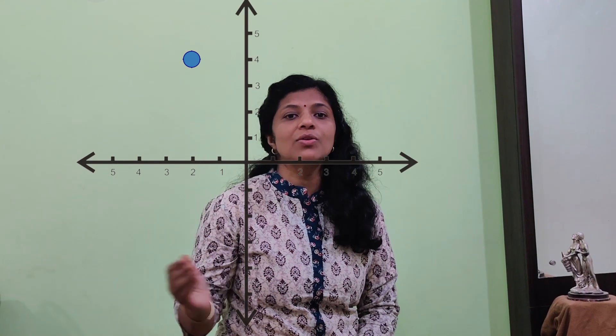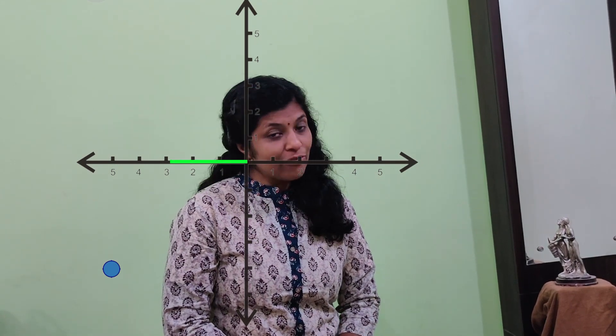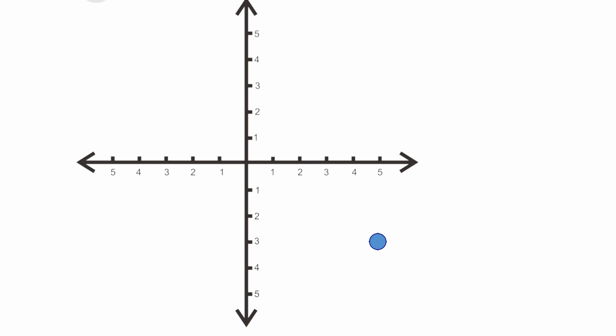This point is 2 units to the left of zero and 4 units above zero. We have already discussed that numbers to the left of zero are considered negative. So this point can be described as (-2, 4). Now this point is 5 units to the left of zero and 4 units below. So according to the sign convention we use, this point will be (-5, -4). Wherever the point may be, we always write the coordinates of the point as an ordered pair (X, Y). The first number will always be the abscissa or the X coordinate, and the second will be the ordinate or the Y coordinate. And this point will be (5, -3).